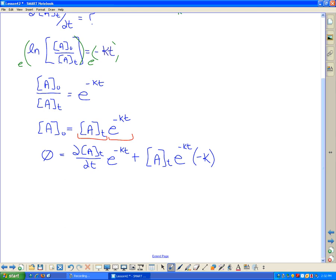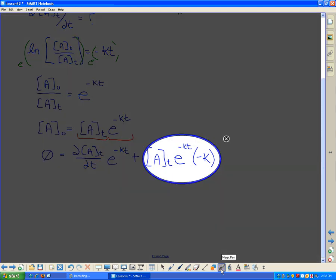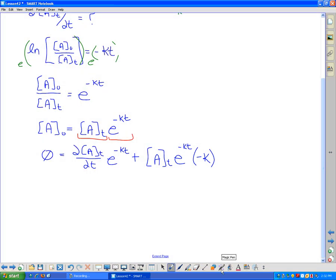So I want to isolate for dA/dt. That means I'm going to move this term to the other side of the equal sign. So I end up with, that k is negative, so it's going to be a positive k concentration of A times e to the exponent negative kt, equals d concentration of A with respect to dt times e to the negative kt.